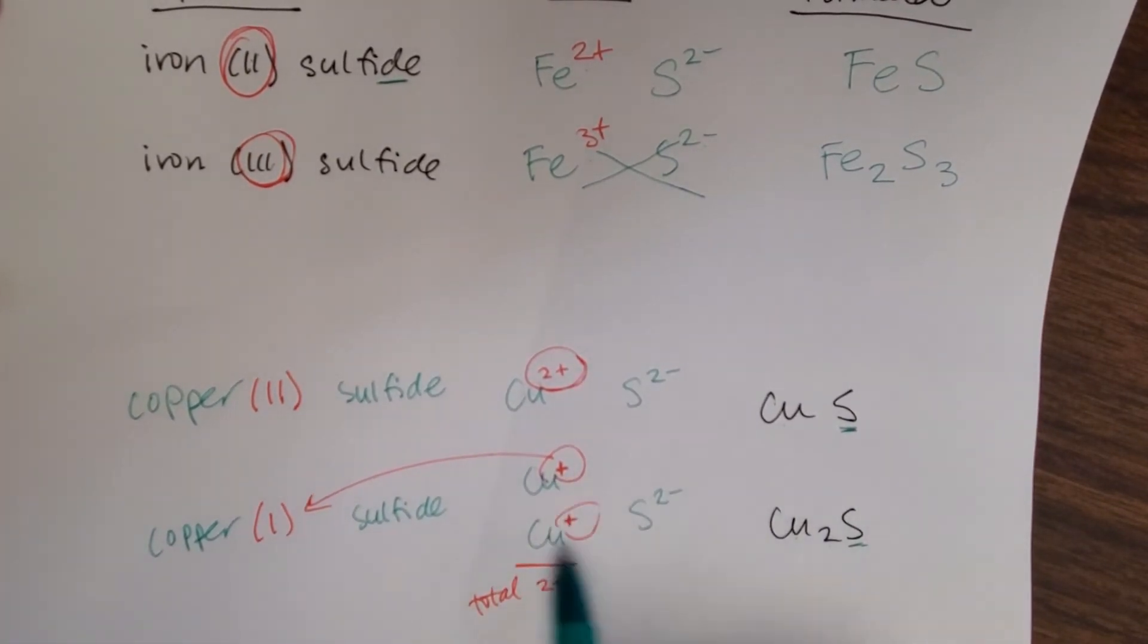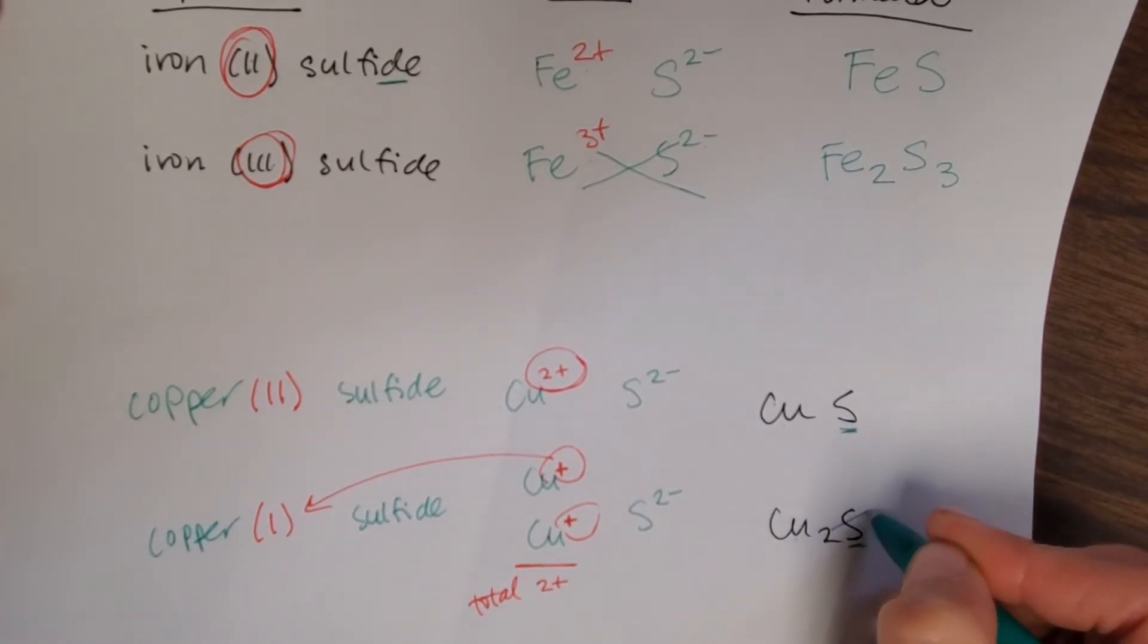Something else that will usually work here as you're figuring out ions is to take the subscripts - this would be a one here - so take the subscripts and cross them up, and that would give you copper+ and sulfide 2-.